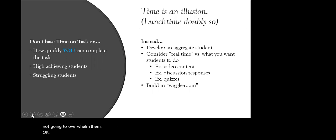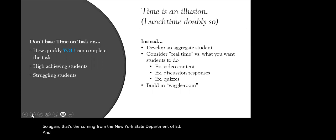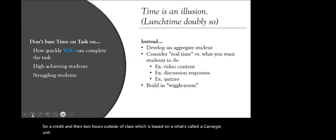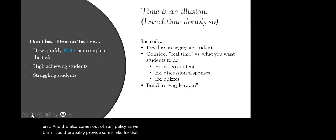A question came in: where do you get the 45 hours from in the formula of 45 hours times three credits? That's coming from the New York State Department of Education, based on the idea that you would spend one hour in the class per credit and then two hours outside of class — what's called a Carnegie unit. This also comes out of SUNY policy as well, and links will be provided in the chat.